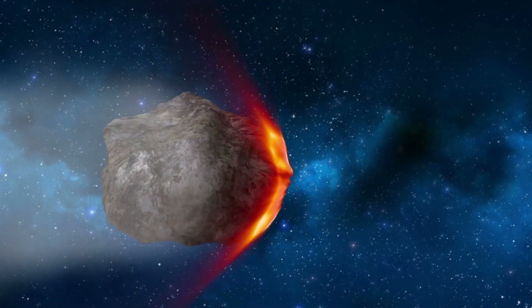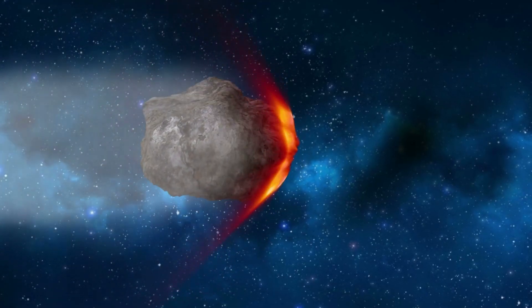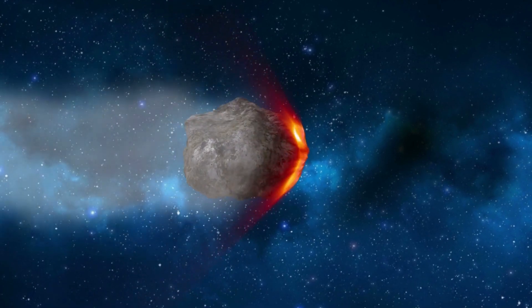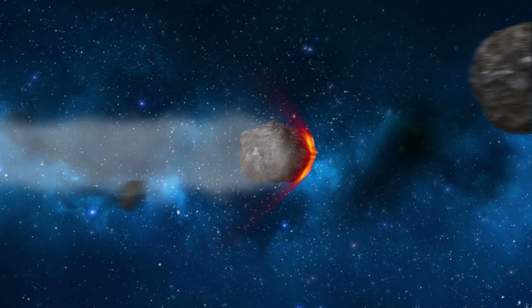Comets are essentially the remains of the early solar system and are composed of dust, ice and gas. They occasionally orbit so close to the Sun that they become hot and bright.